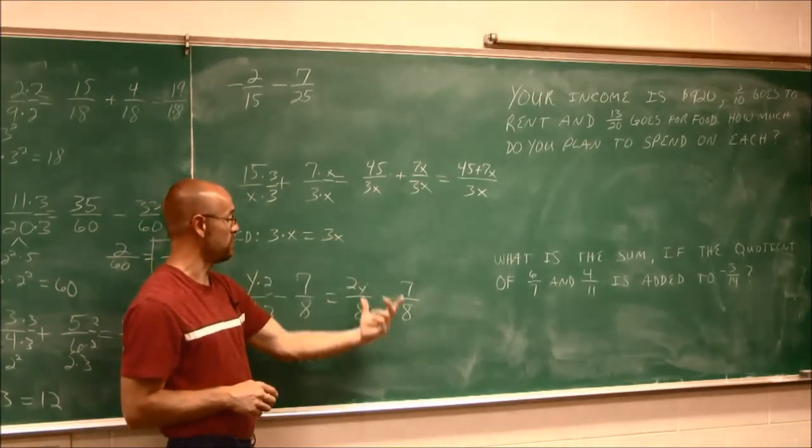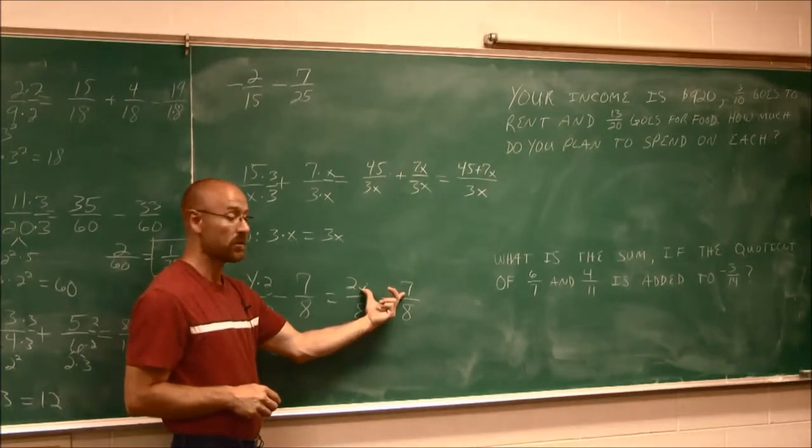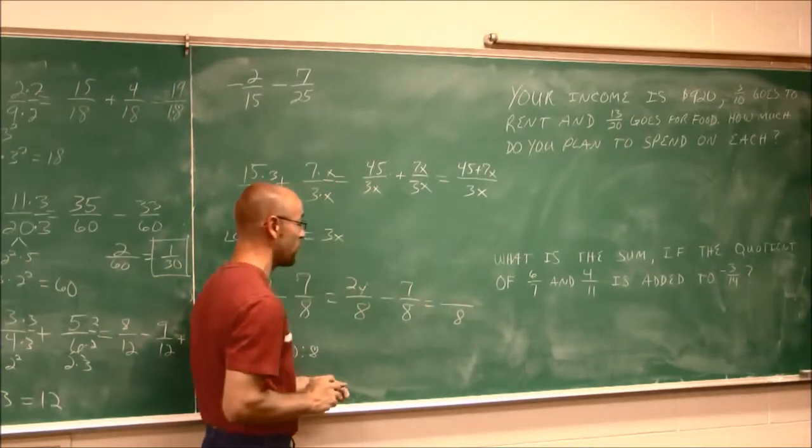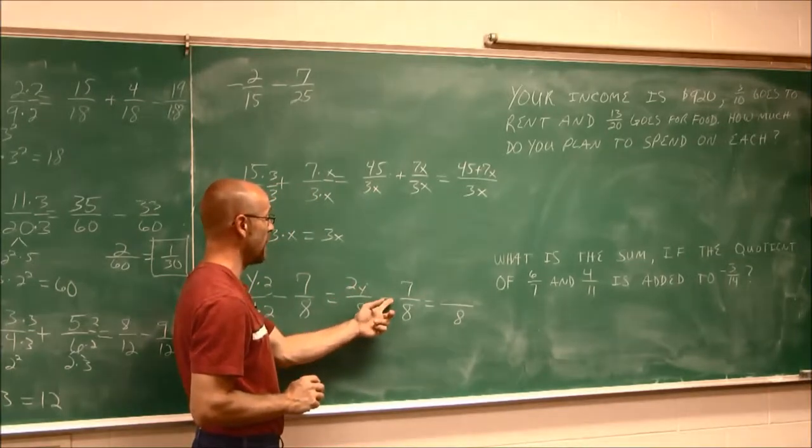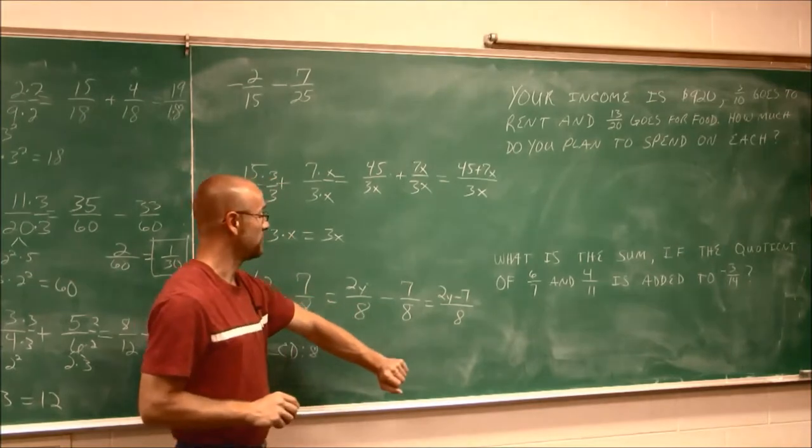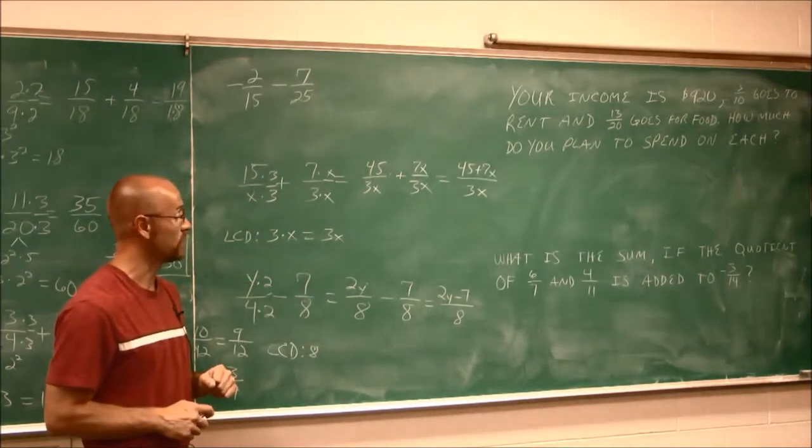And now, just like the previous example, well, these are not like terms, but they have a like denominator. So I can write them both over that like denominator. 2y minus 7. And there we have. That's our simplified form. We can't go any further.